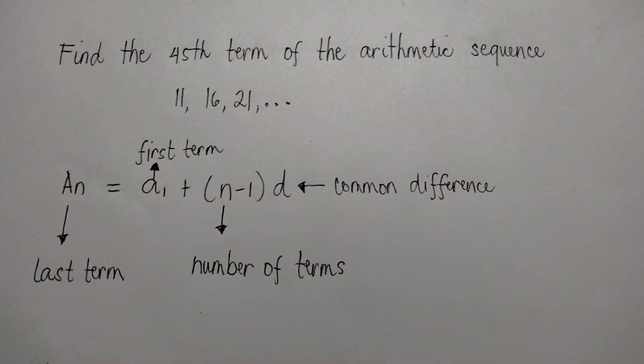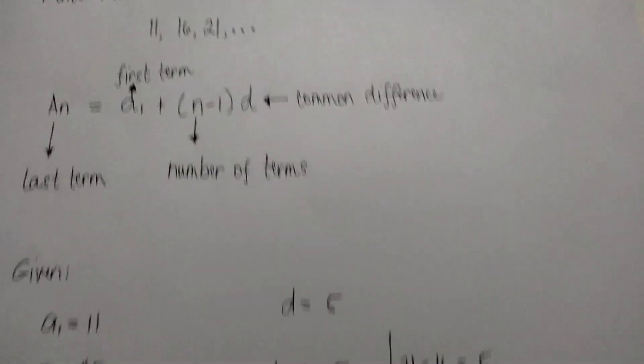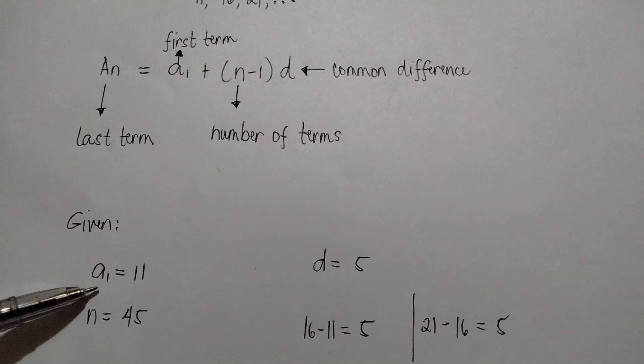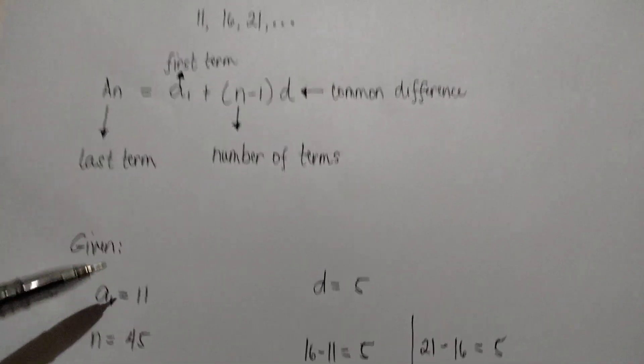Now, we are going to identify the given from the problem. The given are the following: a sub 1, the first term, is 11.